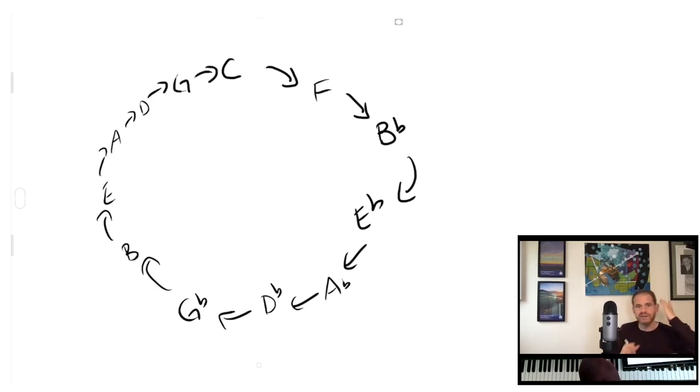It's a way of formulating all 12 keys moving in the interval of fifths. There's a few reasons why this is important. One is that it's a nice way to get you through all 12 keys. If you're a newer student and you're working on learning all your major triads, one really nice way to do it is moving through the circle of fifths. But it also gets you to all 12 keys in a logical way.